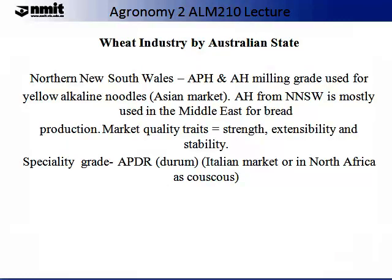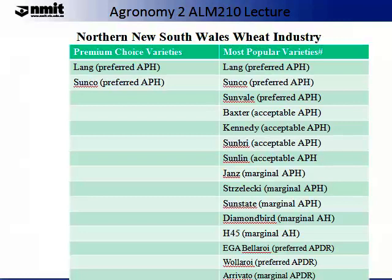Northern New South Wales serves a similar market to Queensland. It aims to produce predominantly APH and AH milling grades used for yellow alkaline noodles for the Asian market. AH from Northern NSW is mostly used in the Middle East for bread production. The quality traits it is aspiring to are strength, extensibility and stability. It also produces special grade APD Durum for the Italian market or for the North African market as couscous. The most popular premium choices are Lang and Sunco for the preferred APH, with Diamond Bird and H45 as marginal AH varieties not typically seen in Queensland.